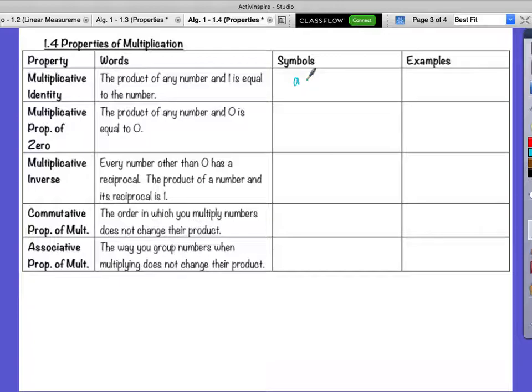So in symbols, a times 1 is equal to A. Anything times 1 is itself, right? So very similar to how we have the additive identity, anything plus 0 is itself. Multiplication, anything times 1 is itself.